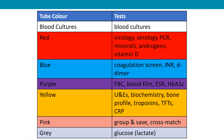The different colour-coded bottles mean the following: red bottles are for virology samples, serology, PCR such as an HIV test, minerals, antigens, and vitamin D levels. Light blue top is for coagulation screen, INR, and D-dimer. Purple tube is for haematology tests such as full blood count, blood film, ESR, and HbA1c. Yellow is for biochemistry including urea and electrolytes, most biochemistry tests, bone profile, troponins, thyroid function tests, and CRP.